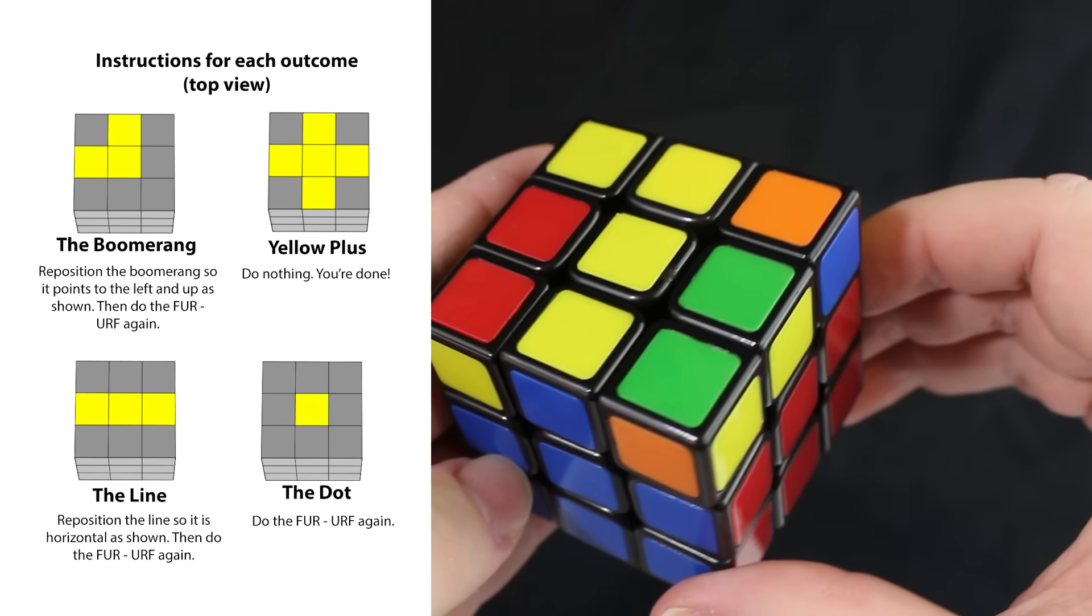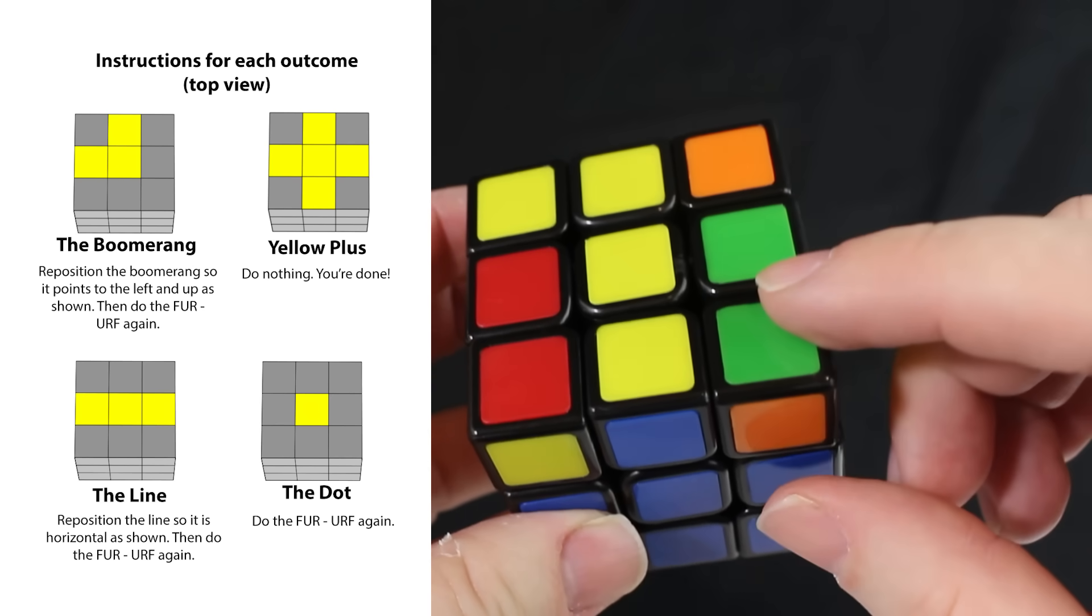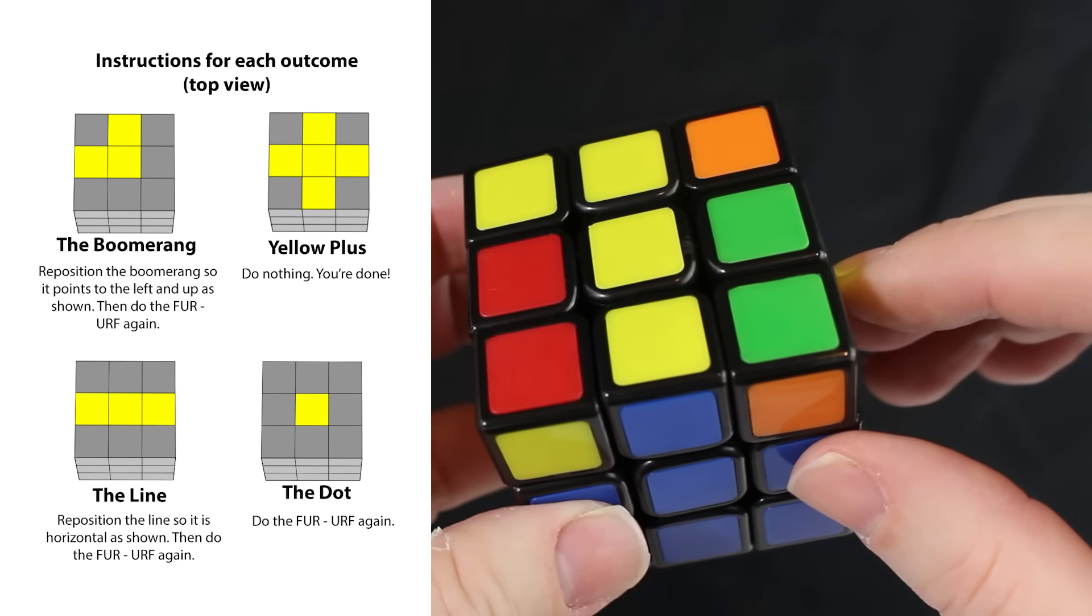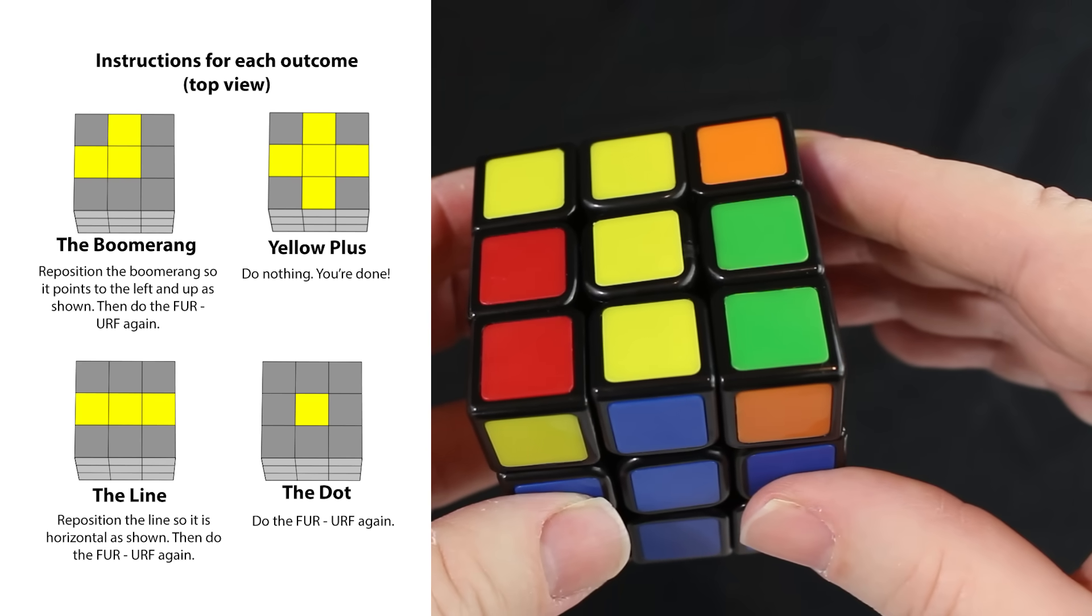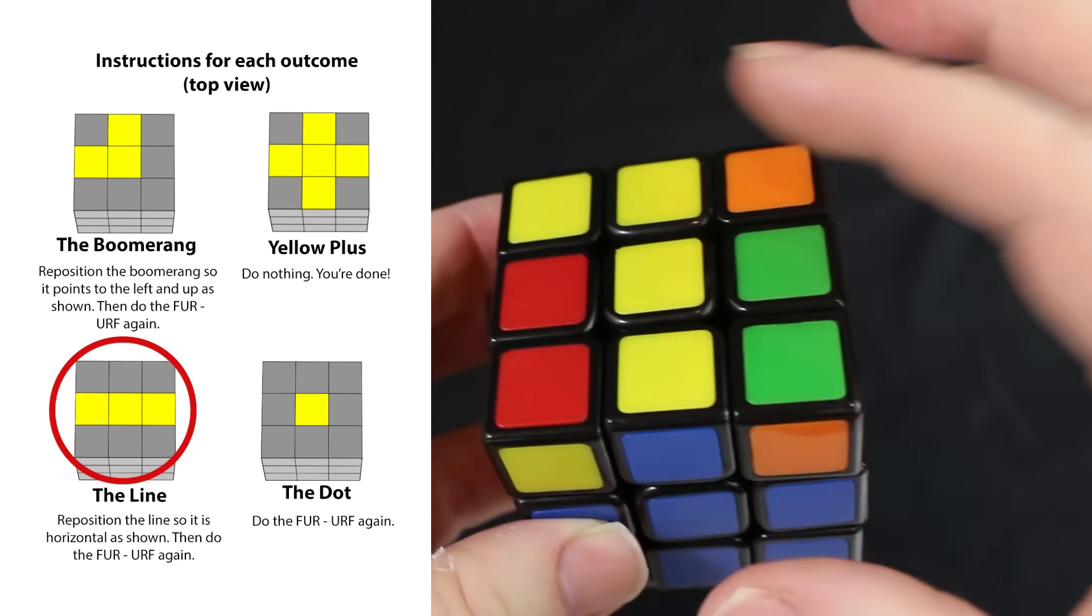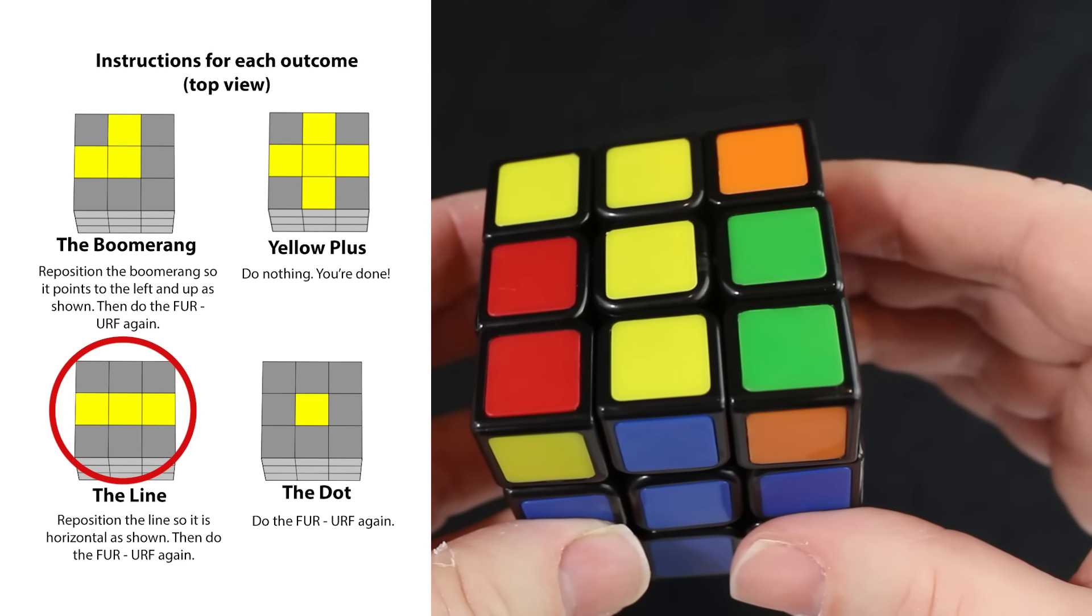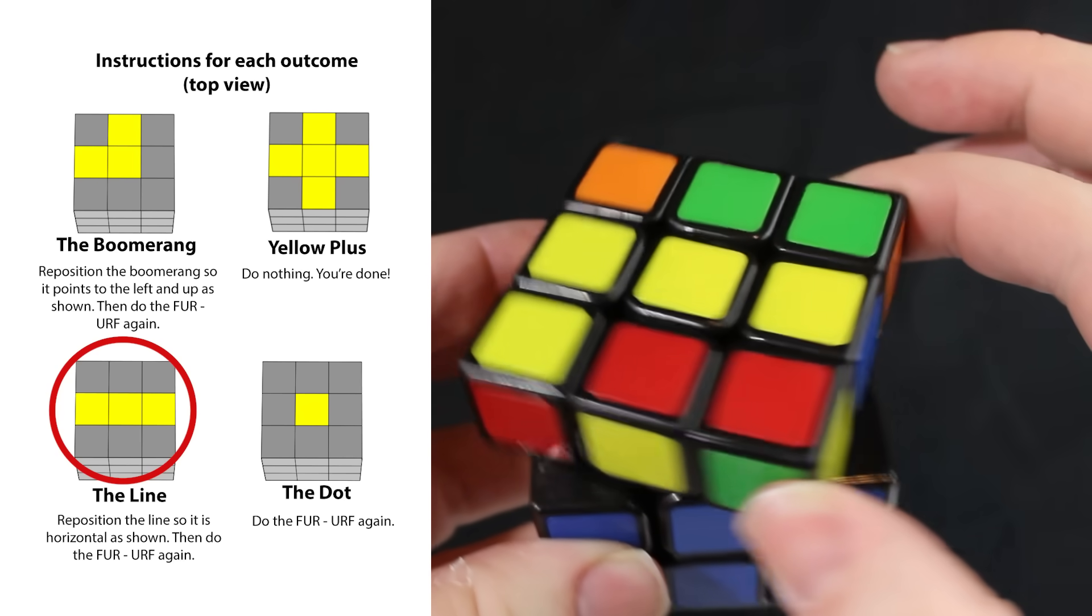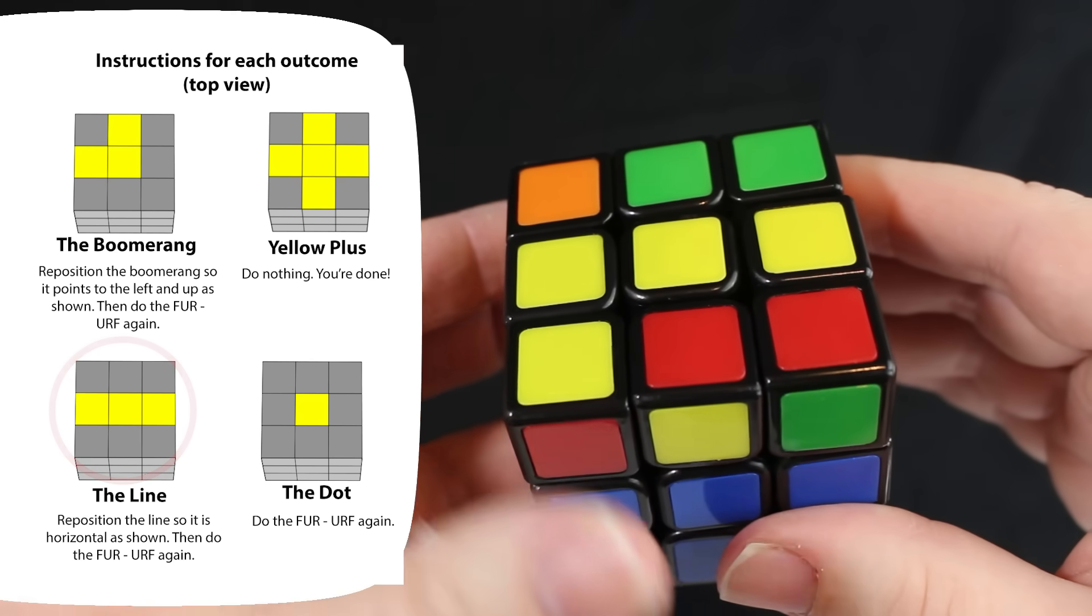So we're trying this again. Which image looks like this one? Take a look at the graphics on the screen. Which of those look like this situation here? Take a look, what do you think? Yeah, it's the line. That's the line. So all we have to do is make it match that orientation on the graphic, which is horizontal. So we're just going to turn it so it matches. Now we have this horizontal line. Now we do the moves.